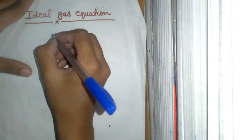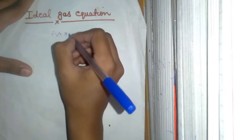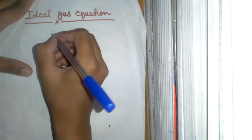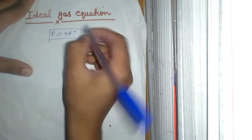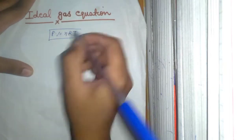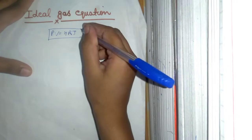We know that PV is equal to nRT. We all know this. But if you write it in your exam, in which way will you write it?